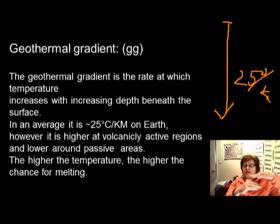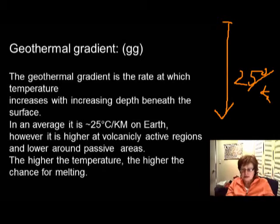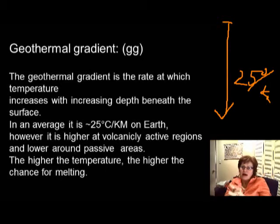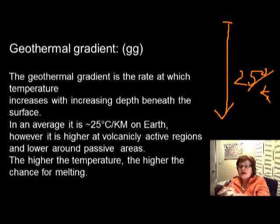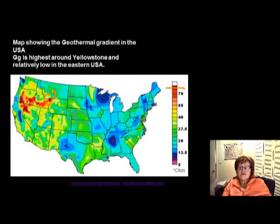The Pacific plate is going underneath North America, especially in Oregon and Washington. In those areas the geothermal gradient is going to be much higher because there is melting going on under there. Or if you are at the supervolcano in Yellowstone, the geothermal gradient is going to be much higher. But if you are on a passive margin, such as Virginia or North Carolina, the geothermal gradient is going to be lower than the average. Here we have a map which shows exactly this — Yellowstone has a much higher gradient than 25 degrees, and Virginia and those areas are pretty low.